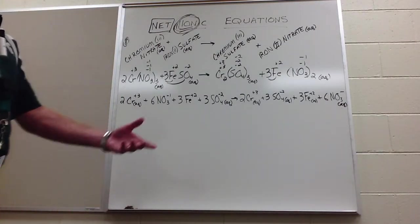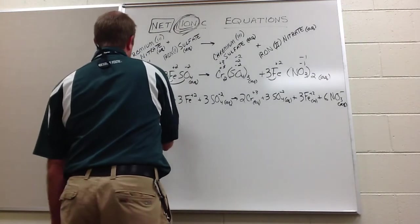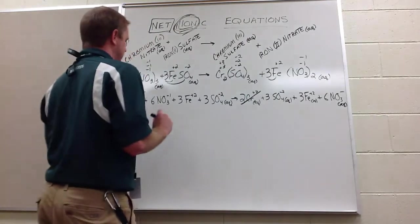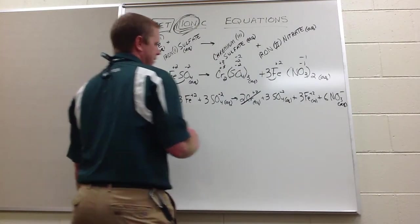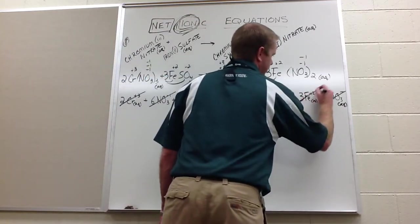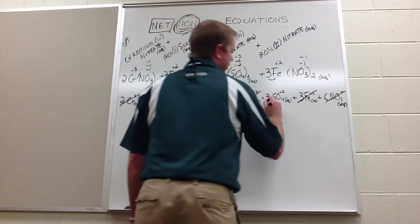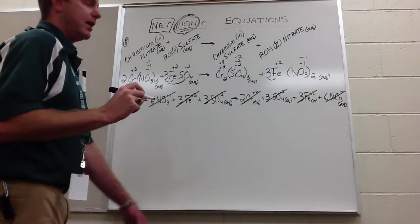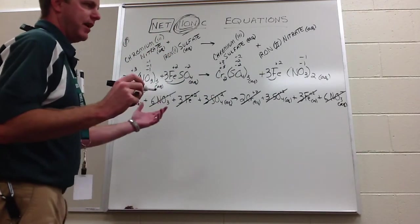Now what we do is start looking for spectators. So we say, okay, two Cr plus threes, two Cr plus threes. Six NO3 minuses, six NO3 minuses. Three Fe plus twos, three Fe plus twos. Three SO4 two negatives, three SO4 two negatives. So you end up saying to yourself, oh my goodness, everything cancels.